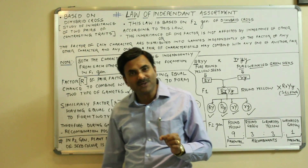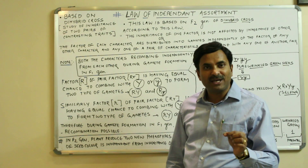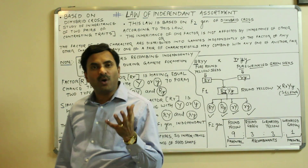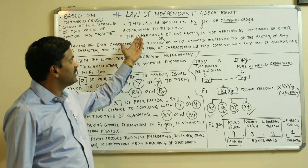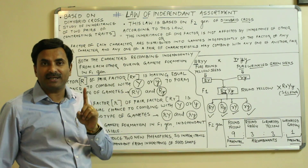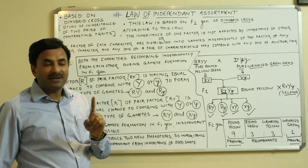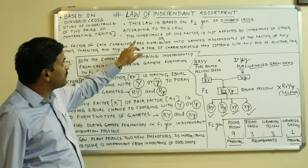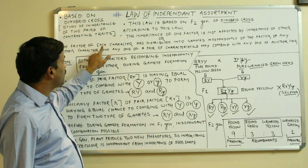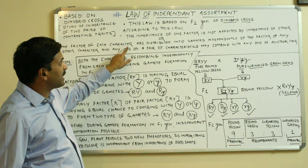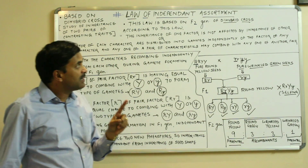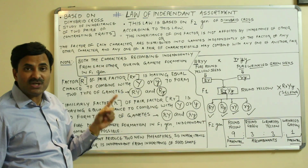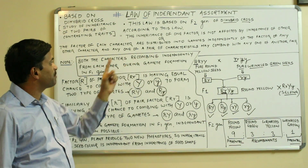This law is based on the dihybrid cross, and we know very well that a dihybrid cross is one in which we take two pairs of contrasting characters. According to this law, the inheritance of one factor is not affected by the inheritance of another — that is, the inheritance of one factor is independent of the inheritance of another. The factor of each character (factor means genes) are distributed into the gametes independently of the factor of any other character, and any one of a pair of characteristics may combine with any one of another pair.